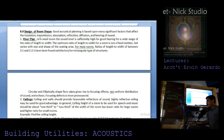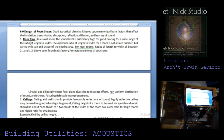Good acoustical planning considers many factors affecting insulation, transmission, absorption, reflection, diffusion, and hearing of sound. For floor plan in a small room, the sound level is sufficiently high for good hearing for a wide range of length-to-width ratios. The optimum ratio of width for a room is not fixed but varies with the size and shape of the seating area.